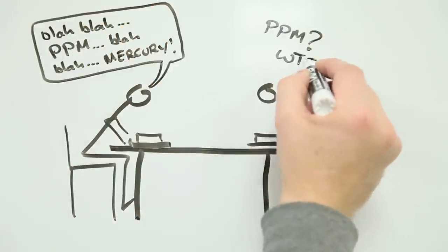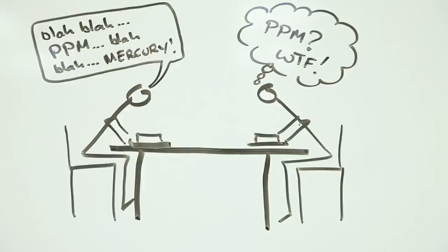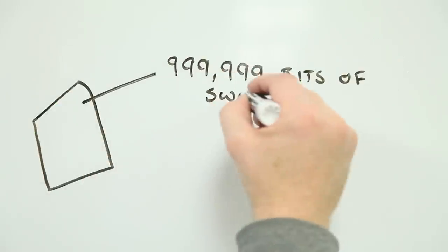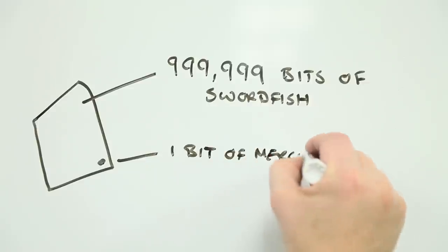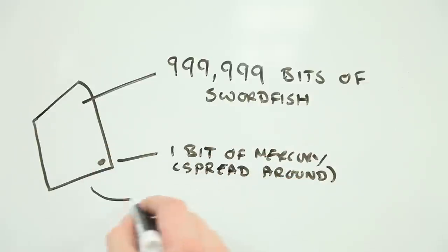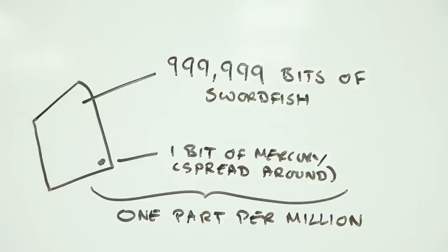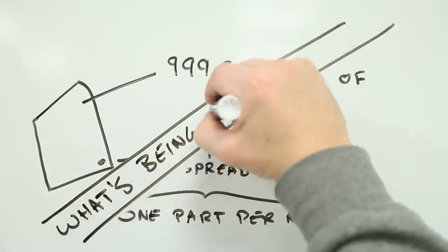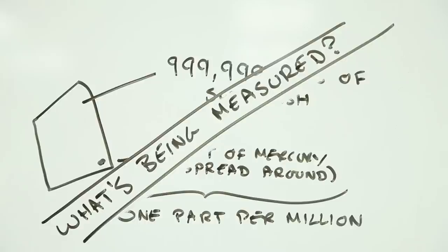If we're talking about stuff that you don't want to be eating, like mercury, parts per million, or PPM for short, tells you how much of the bad stuff is in the good stuff, especially if there's just a small amount of the bad stuff there. It's a measure of concentration of one substance in another. The trouble with PPM though is that the value you get depends on what you're measuring.